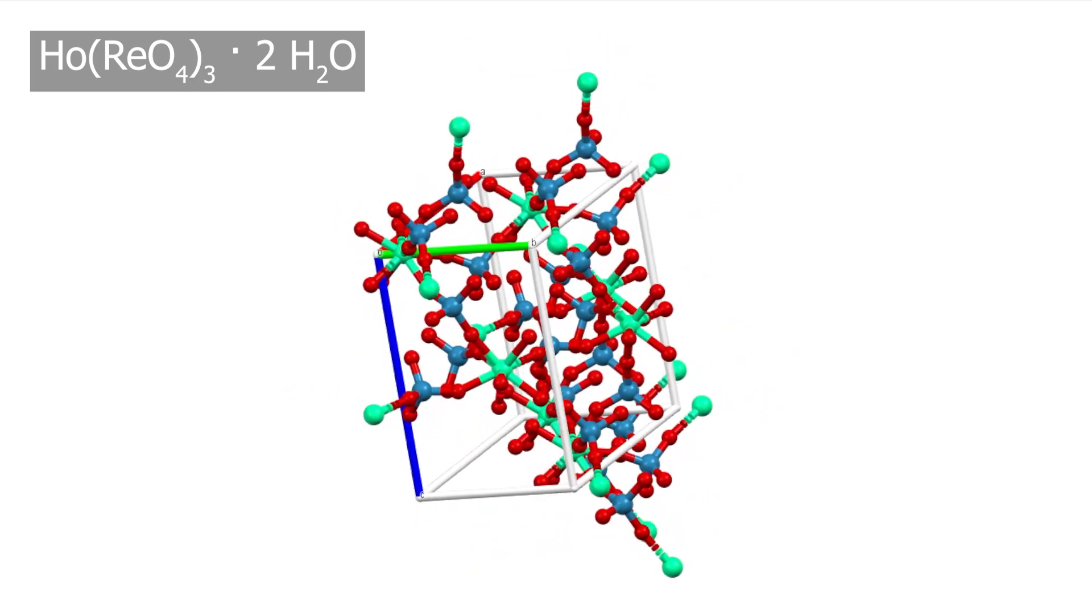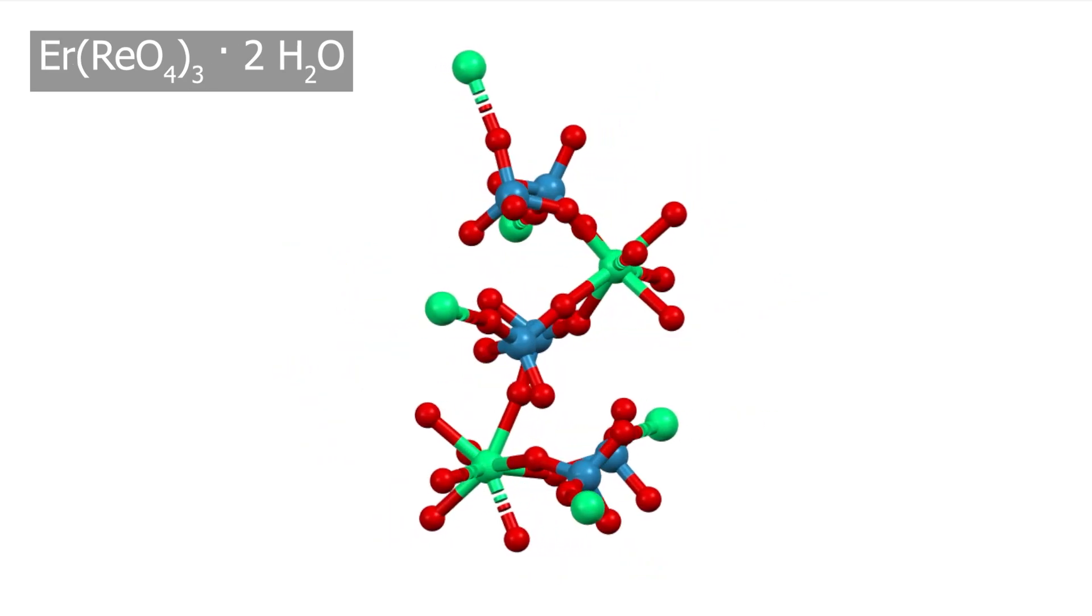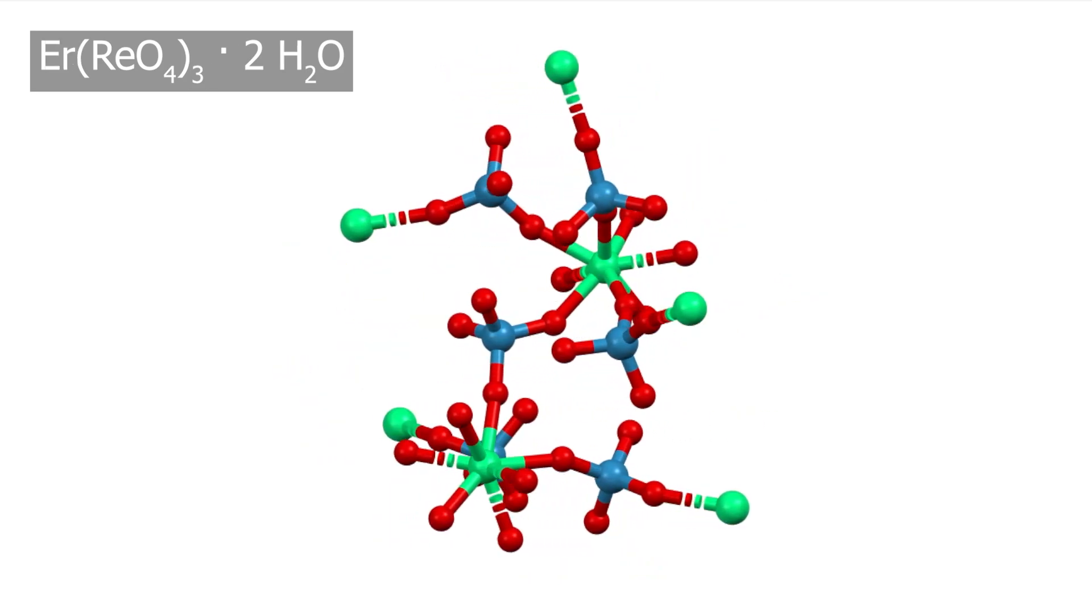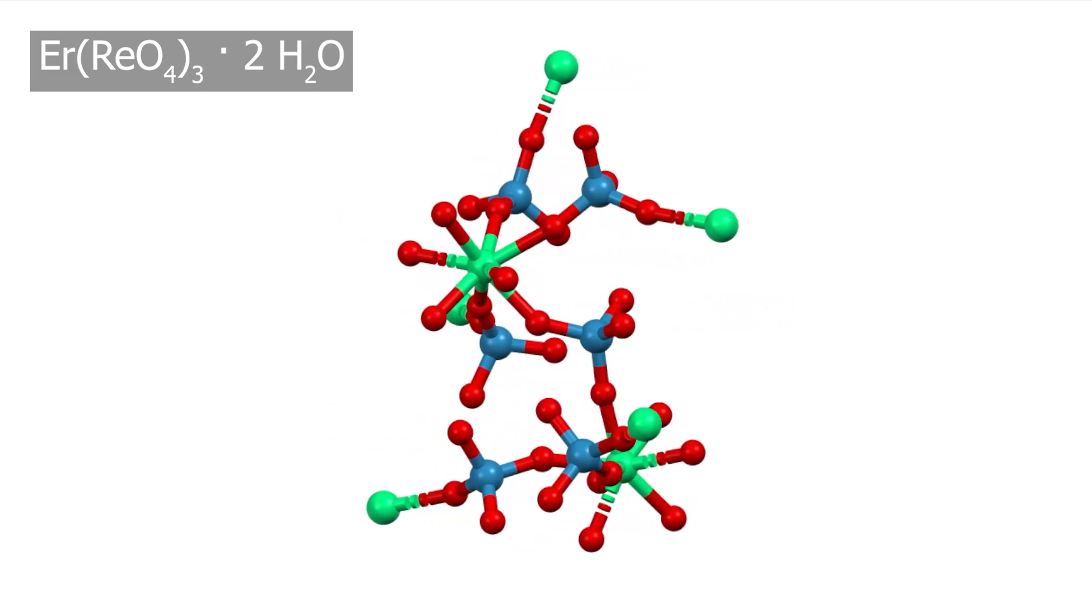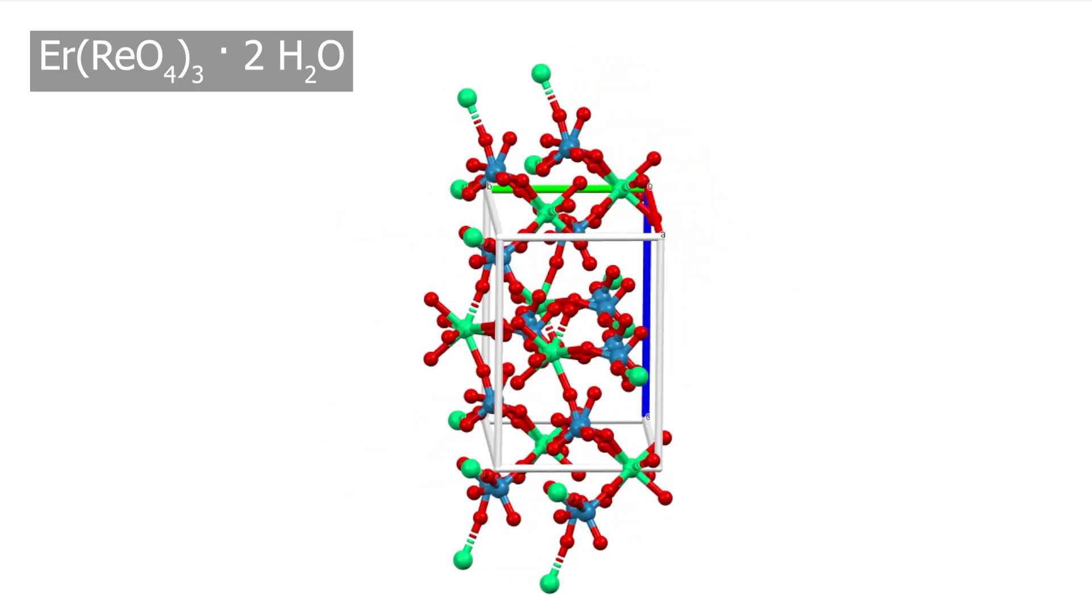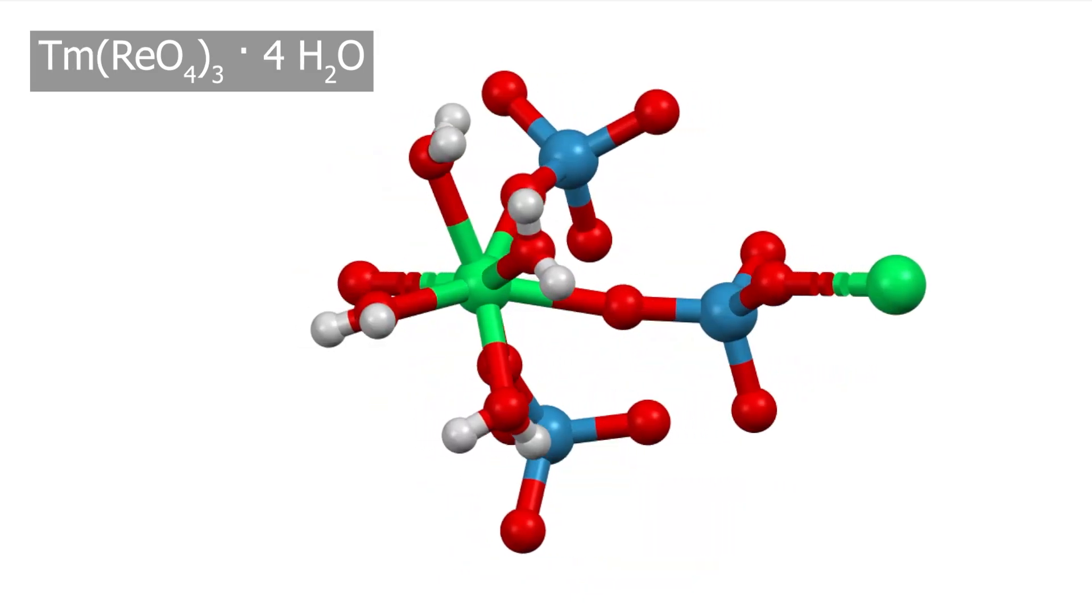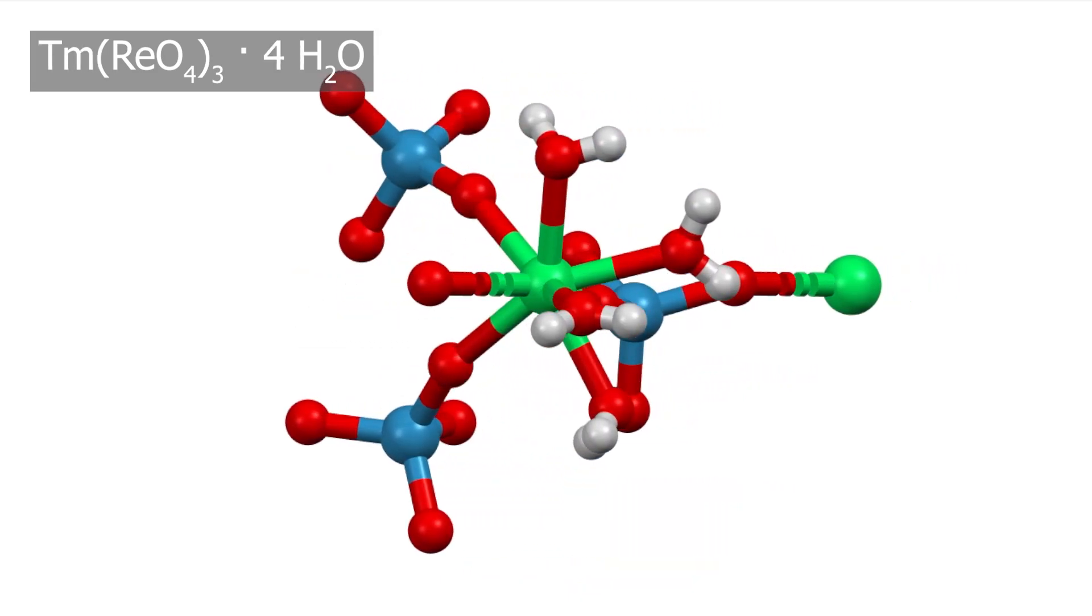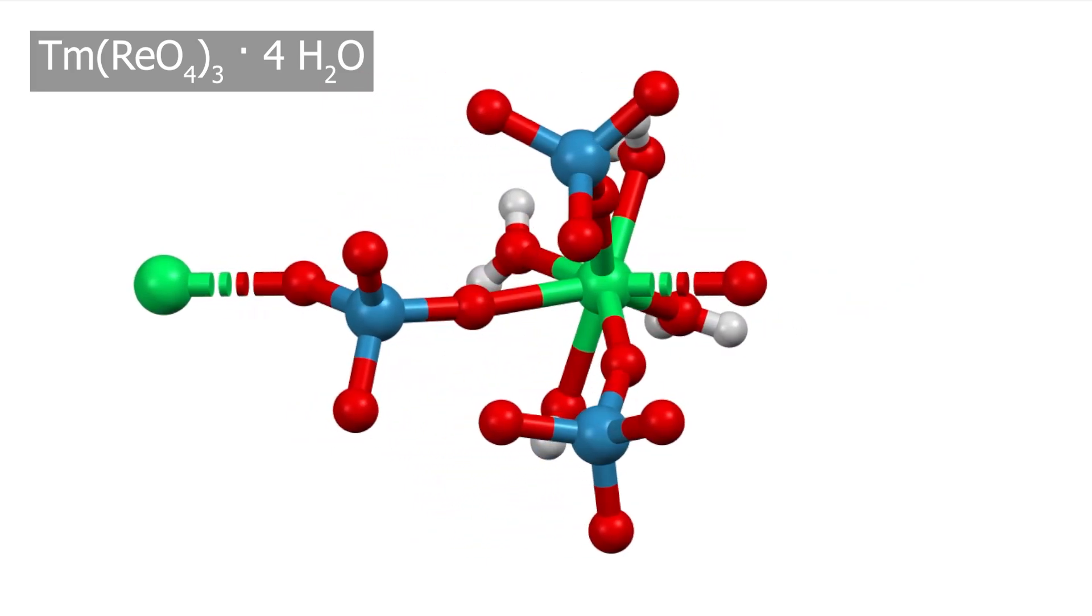In the program Mercury, which I'm using, you can also display the packing. With erbium, you can see very well that this is a dihydrate. Since it didn't crystallize for me, I simply took the data from the ICSD, our go-to database for inorganic crystal structures. Last but not least, the thulium perrhenate. Here the hydrogen atoms are now labeled so that you can actually see that this is a tetrahydrate.